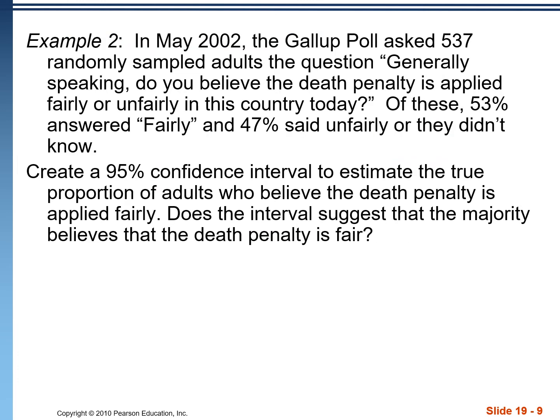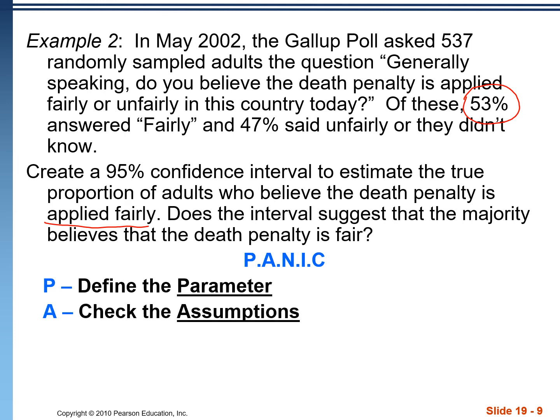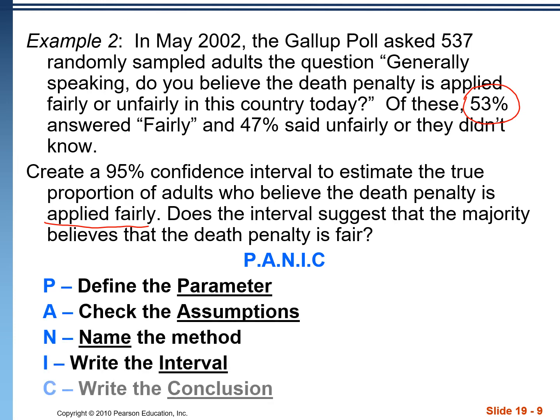Let's create an interval from start to finish. In May 2002, the Gallup poll asked 537 randomly sampled adults whether the death penalty is applied fairly or unfairly in this country today. Of these, 53% answered fairly and 47% said unfairly or didn't know. Create a 95% confidence interval to estimate the true proportion of adults who believe the death penalty is applied fairly. There's a mnemonic device to remember all the steps: define the Parameter, check Assumptions, Name the method, write the Interval, and write the Conclusion — PANIC.